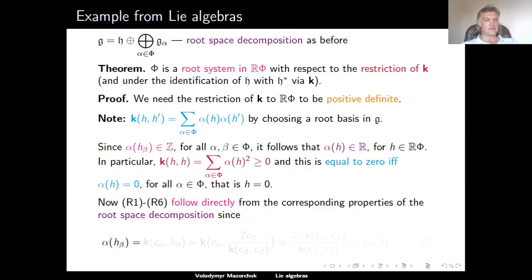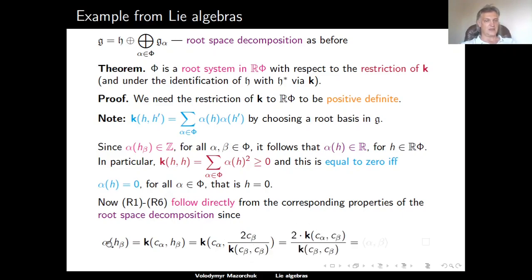With this in mind, the axioms R1 through R6 follow fairly directly from the properties of the root space decomposition recalled earlier. The key observation is that the integers alpha(H_beta) equal the Killing form of C_alpha and H_beta, and since H_beta equals 2 C_beta divided by the Killing form of C_beta with itself, we can write alpha(H_beta) as 2 times the Killing form of C_alpha and C_beta divided by the Killing form of C_beta with C_beta — which is exactly the angle bracket between roots alpha and beta. This completes the proof that the set of all roots of G is a root system in the real span of those roots.